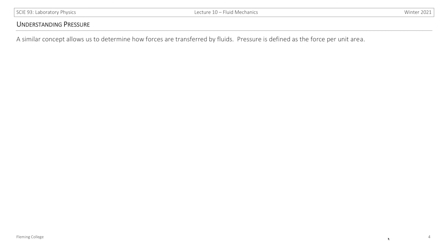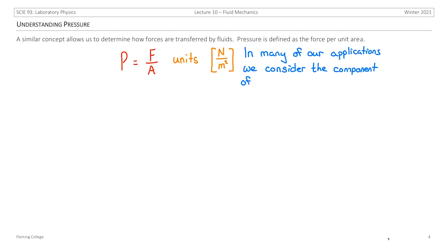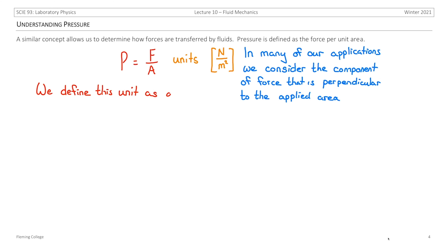We need to consider another concept similar to density: pressure, which allows us to determine how forces are transferred by fluids. We define pressure as the force per unit area, calculated as P equals force divided by area, giving units of newtons per meter squared. In many applications we consider the component of force perpendicular to the applied area — only the force pushing into or out of the surface. This unit of newtons per meter squared is referred to as a Pascal, so 1 N/m² equals 1 Pascal.